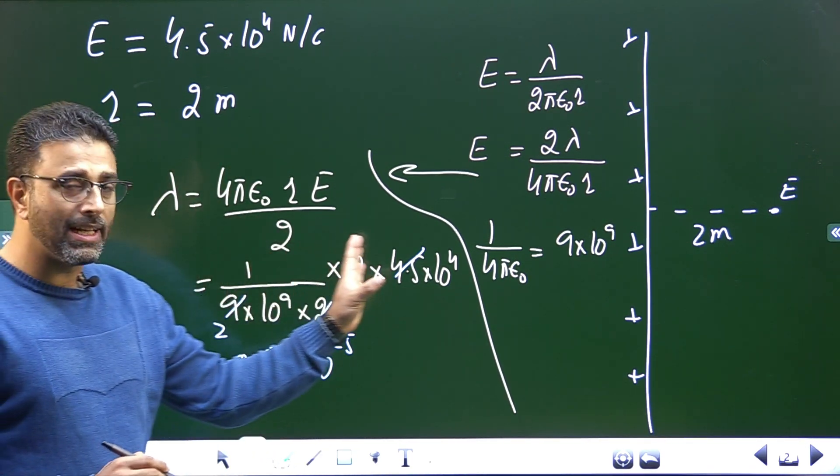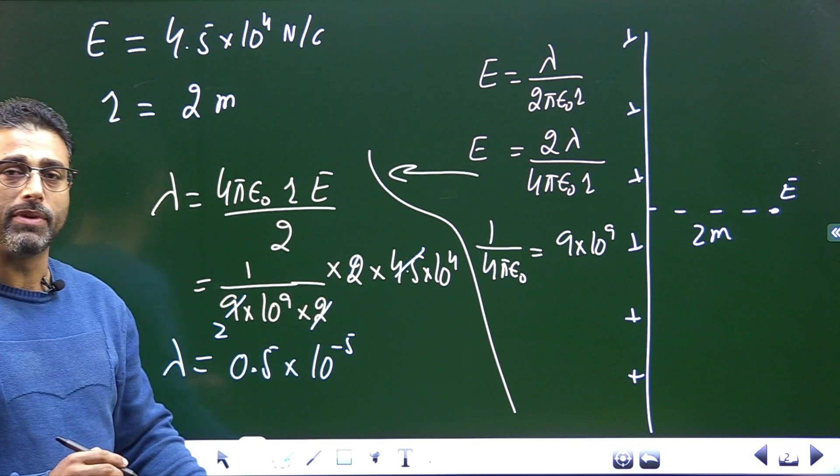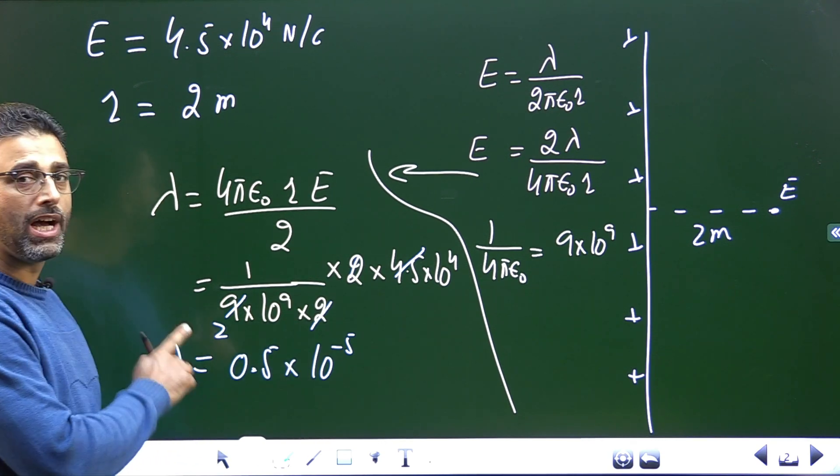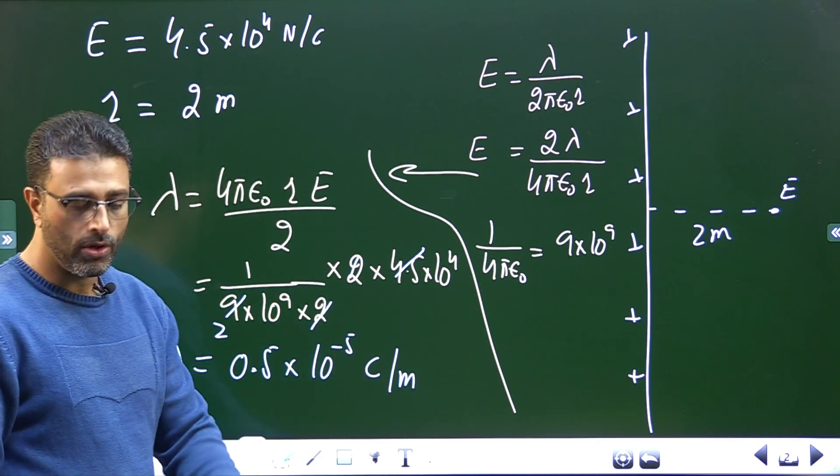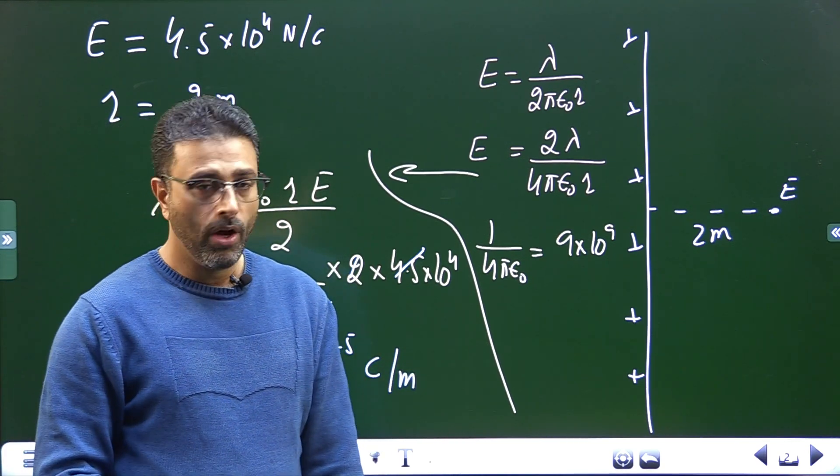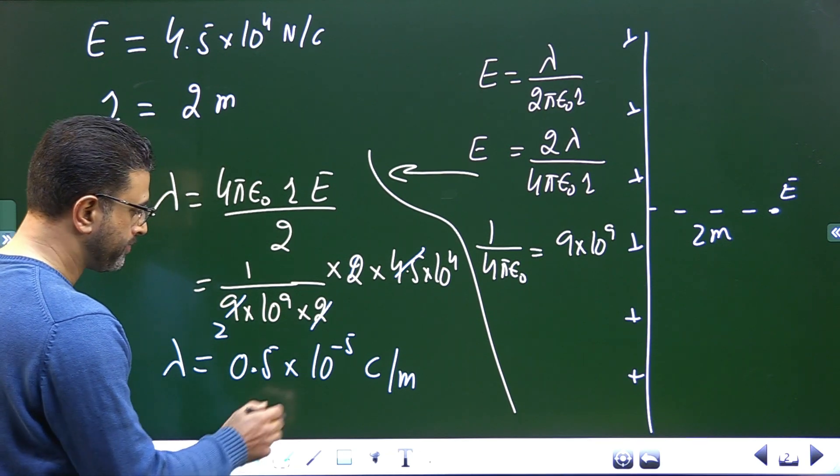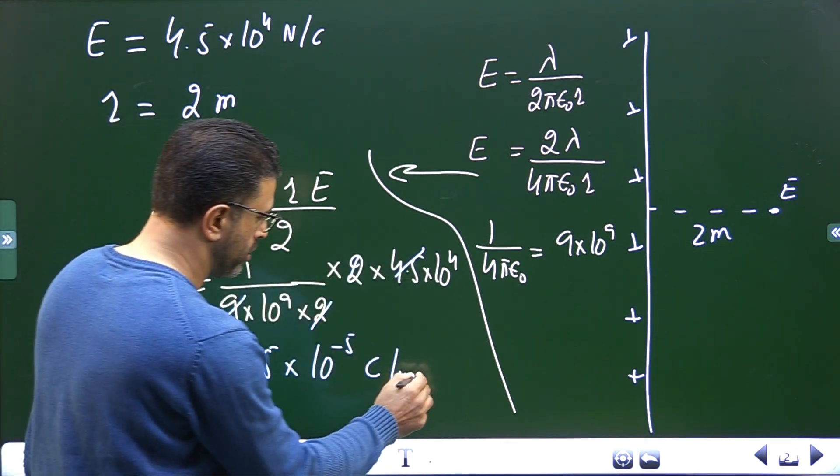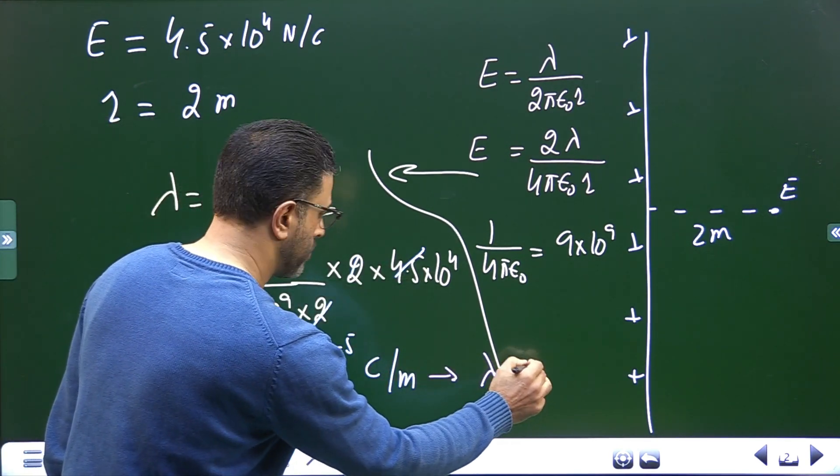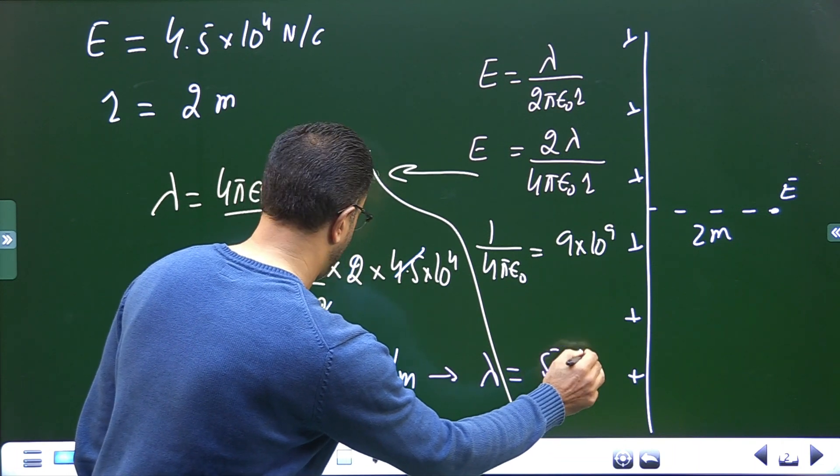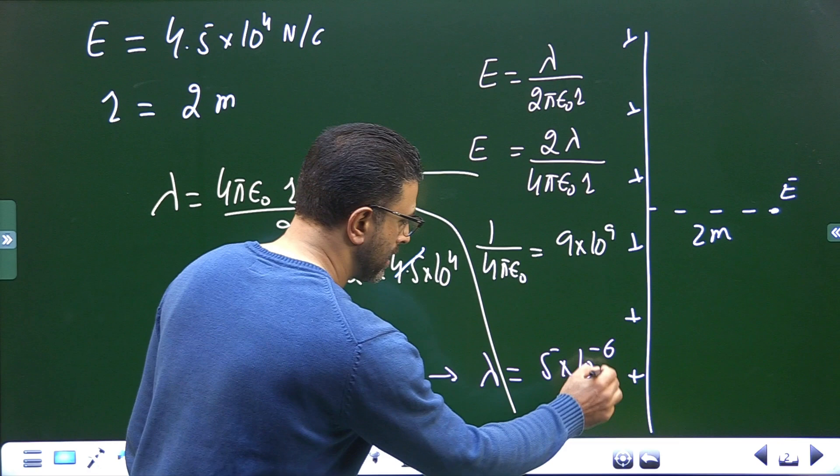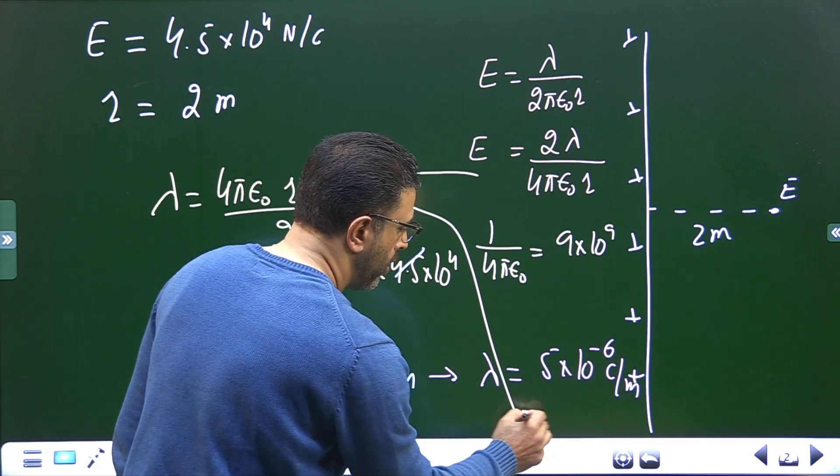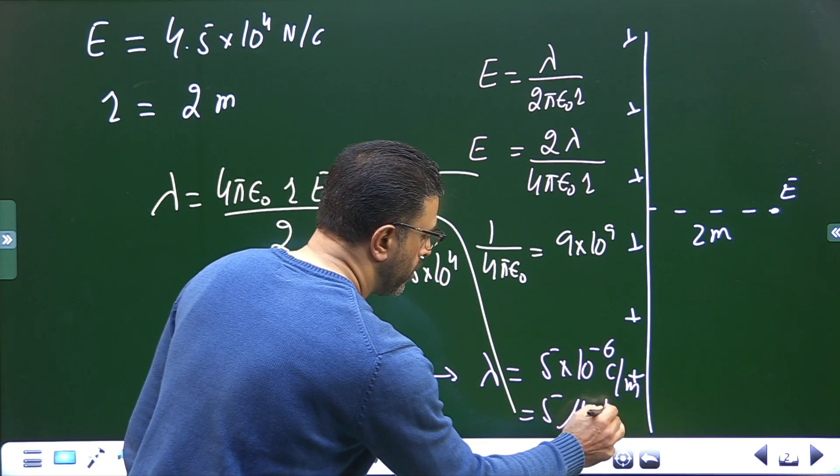We have used everything in SI system, so what we get will also be in SI system. Lambda is charge per unit length, so we will have coulomb per meter. Or this can be written as lambda is equal to 5 into 10 to the power minus 6 coulomb per meter, or 5 micro coulomb per meter.